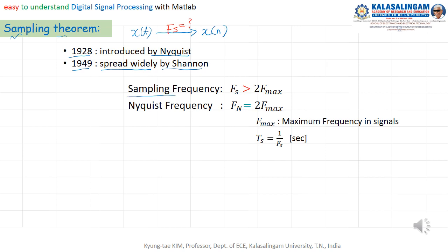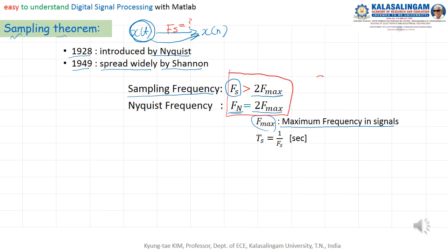So what is the sampling theorem? The sampling frequency for converting continuous to discrete must be greater than two times of F-max, where F-max means the maximum frequency in the signal. Especially, the sampling frequency must be greater than or equal to two times the maximum frequency.